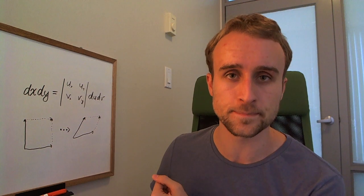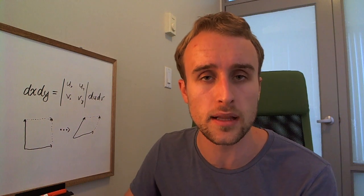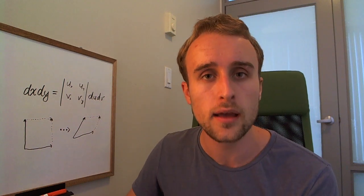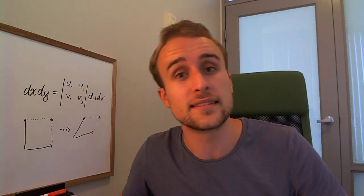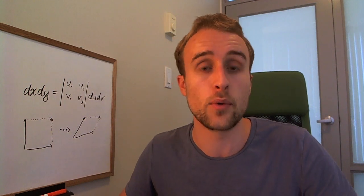So this right here is the Jacobian. And the Jacobian is this little area right here, but it's basically a formula for substituting variables in double integrals. And if none of that made sense, that's fine. It's a later part in calculus, so it'll make sense if you've gone through the prerequisite material.